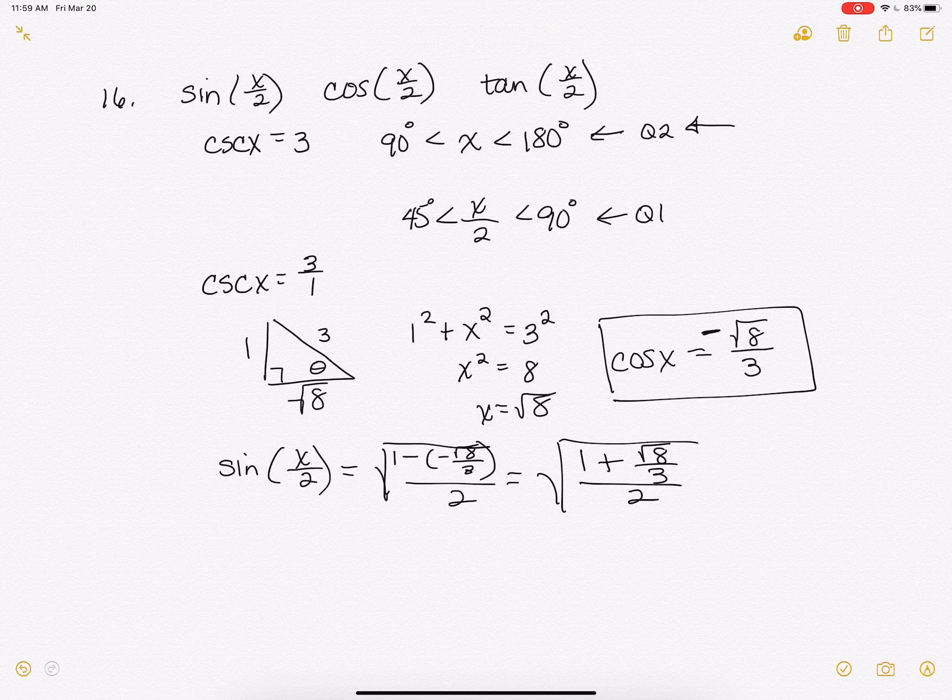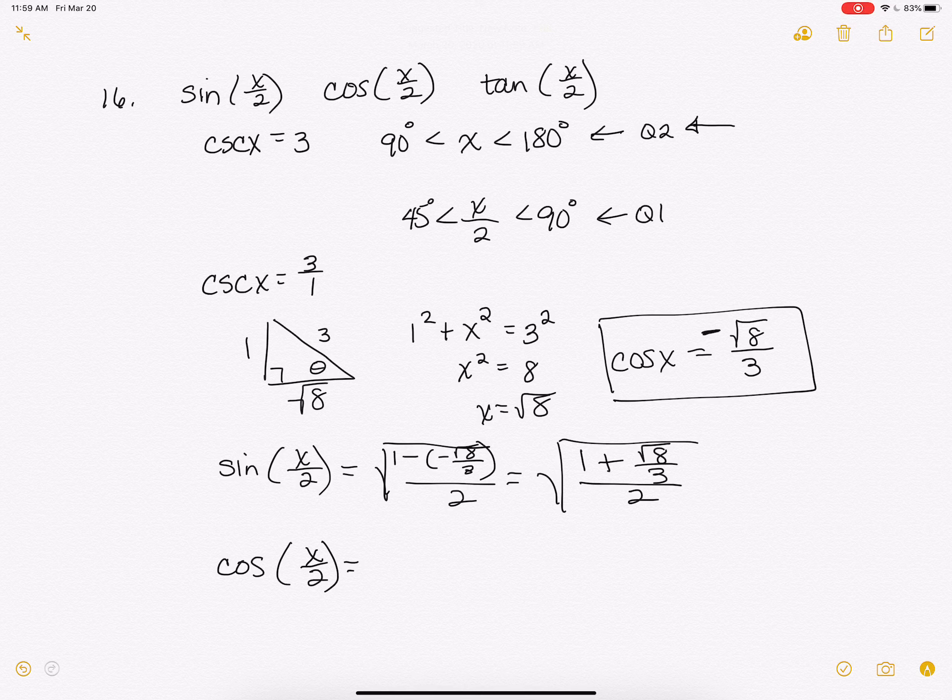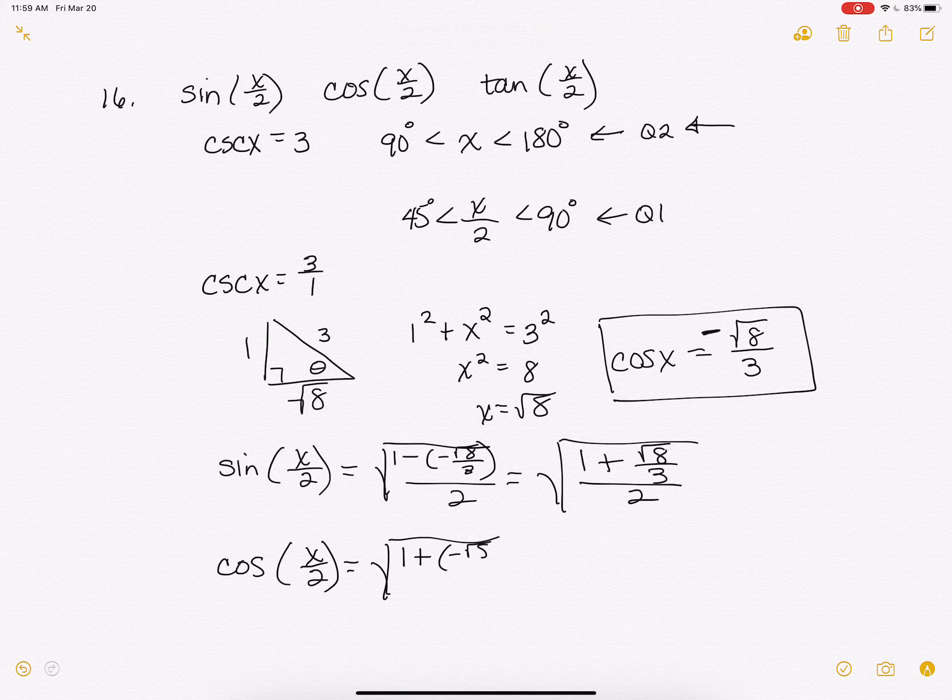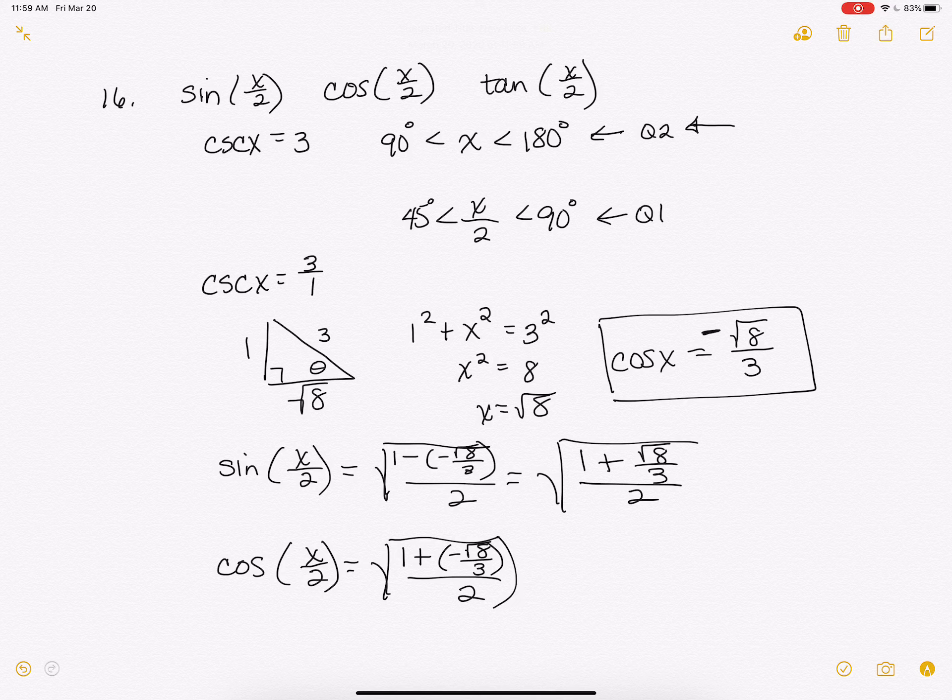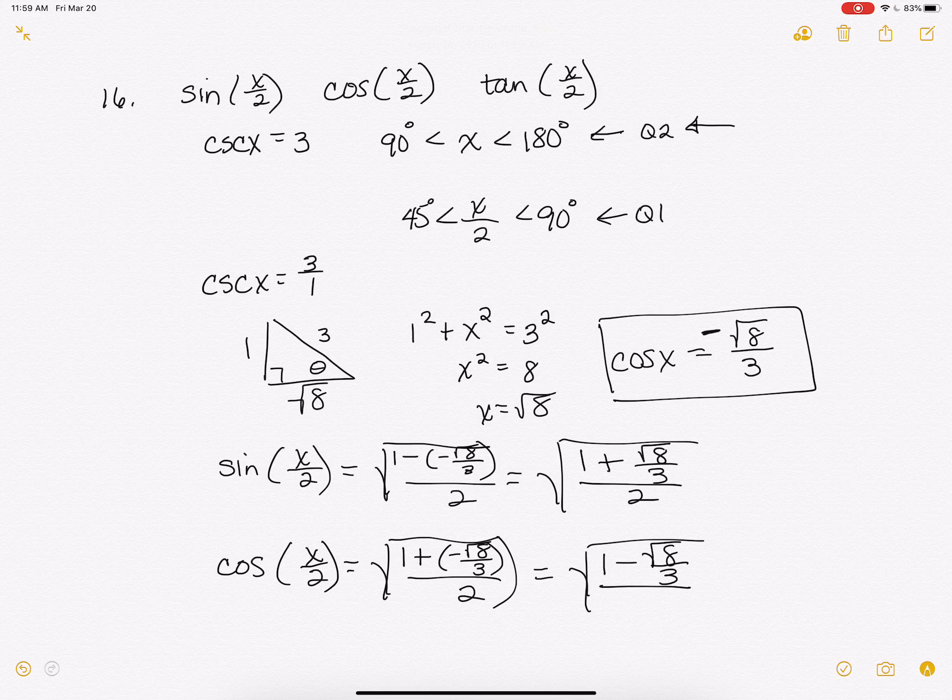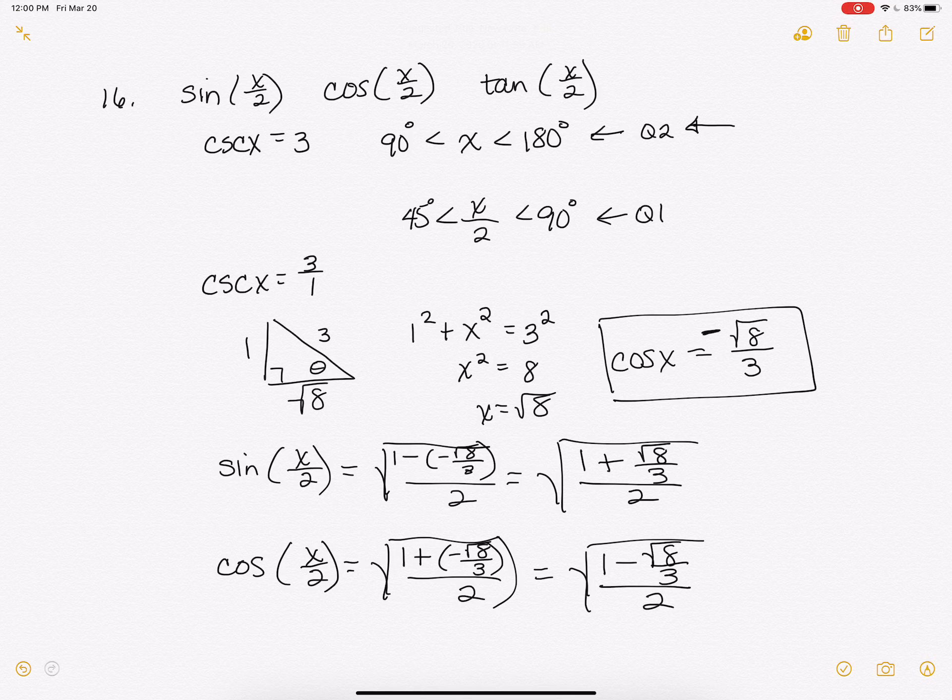Alright, and that's going to change our sign for cosine of x over 2 as well because this is going to be 1 plus, but once again the cosine of x is negative, so that's going to be negative square root of 8 over 3 over 2. So that means this is going to be 1 minus the square root of 8 over 3 over 2. And then, like I said, in WebAssign you can just leave them like that and then our tangent,